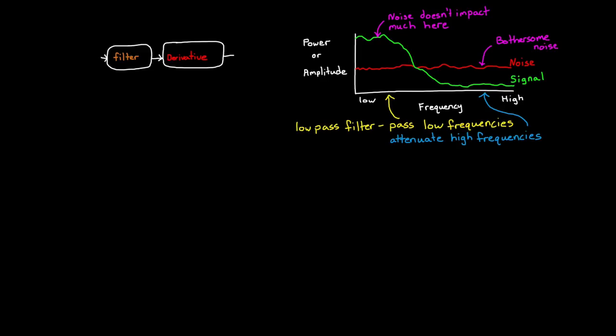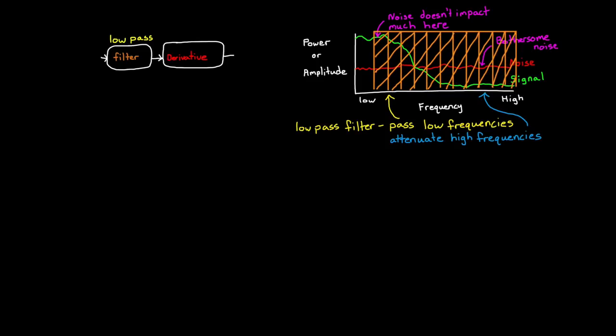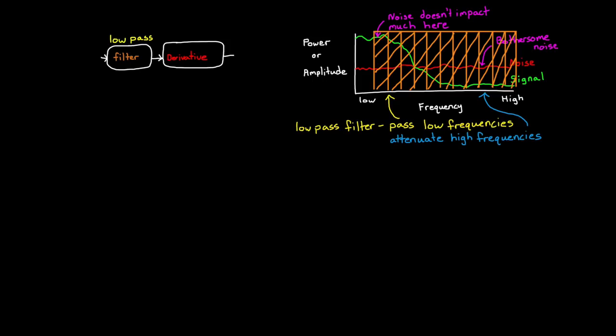It doesn't remove the noise entirely. It just makes it smaller so that even after we amplify it through the derivative, it won't impact our system much. And the key aspect of this filter is determining where to put the cutoff frequency so that you remove as much high frequency noise as possible without impinging on the frequencies that are actually in the signal you care about. We'll talk more about that when we talk tuning in a future video.